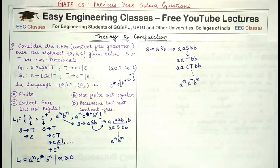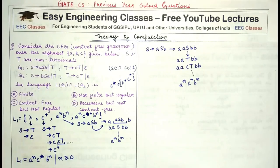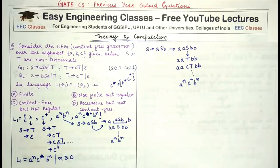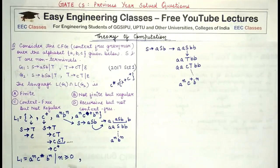And if the number of c's is also zero, only lambda is left. You have to think carefully but be quick in generating the language, because you still need to similarly generate the language from G2.